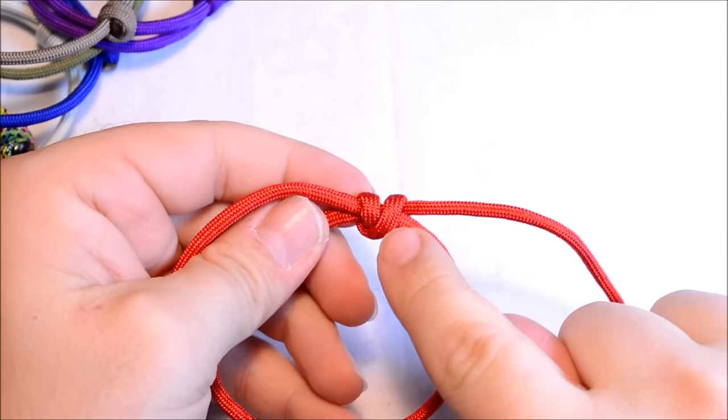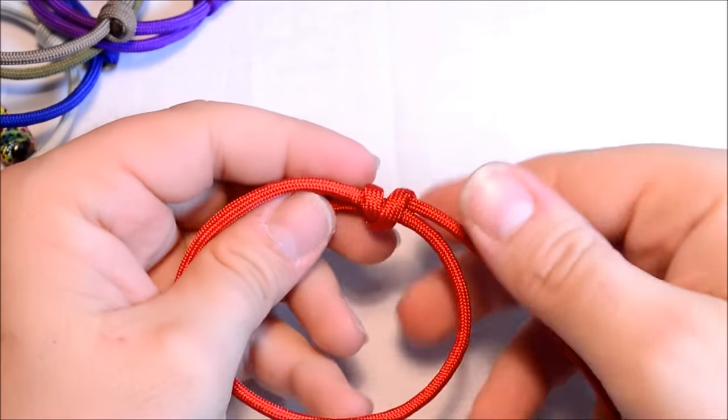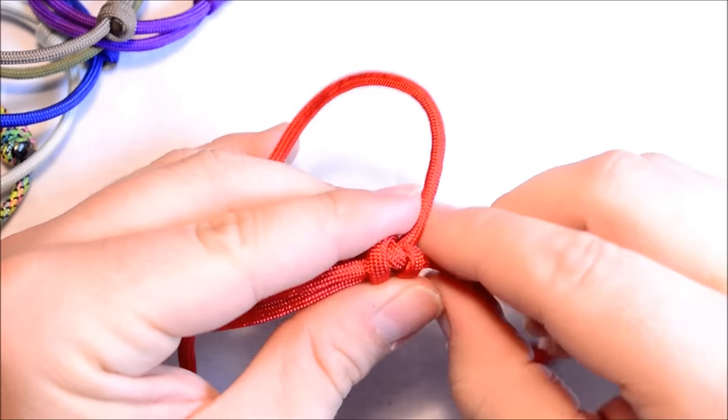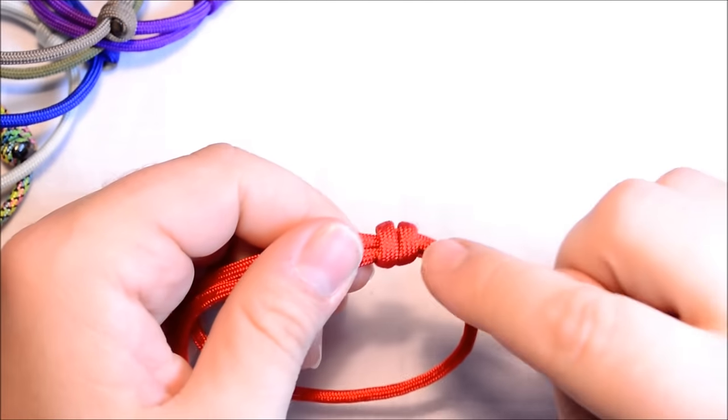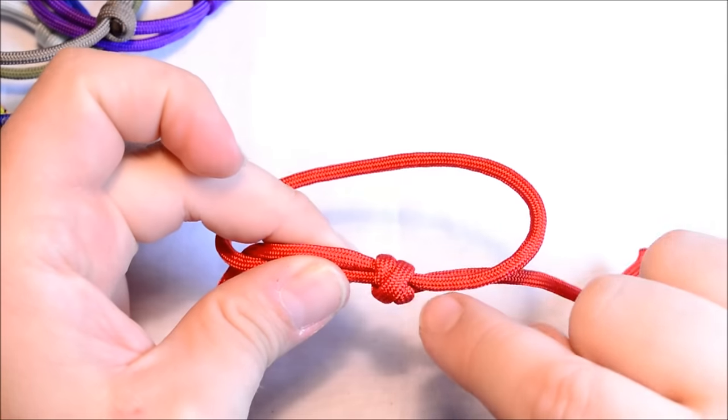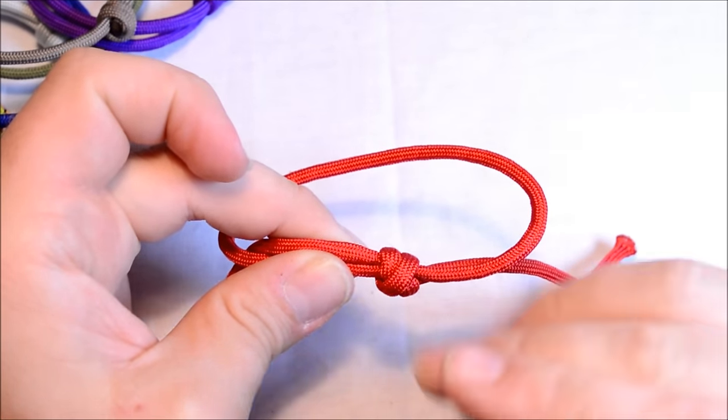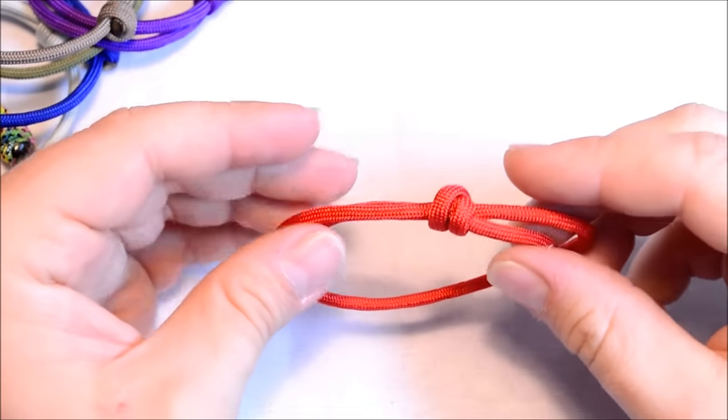If you flip it over, you should have two parallel cords there, and then a set of cords here that looks like an X. Then turn this around and you want to get your cord in the back part of the bracelet here.